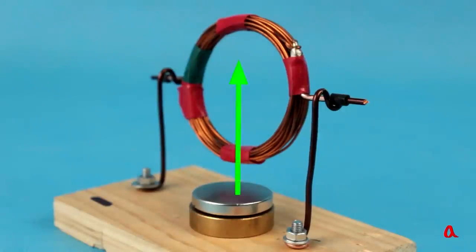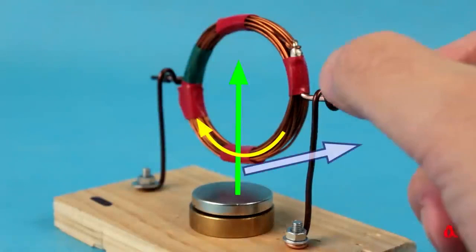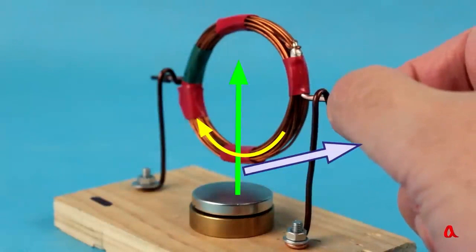Power lines of the magnetic field are directed upwards. The magnetic field near the magnet is much stronger than far away from it. Now, the electric current flows in a ring clockwise. The ampere force is directed to the right, and the coil rotates counterclockwise.